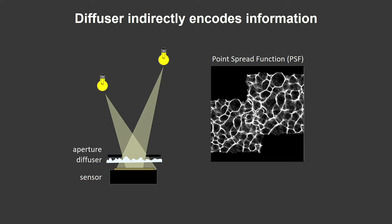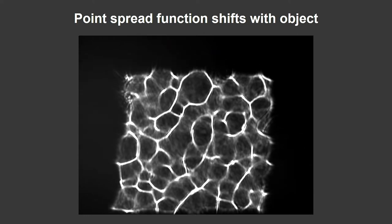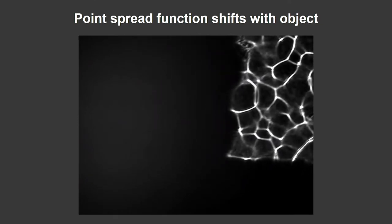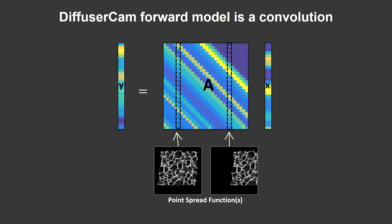This shift property is super valuable because it adds a lot of redundancy to the forward model matrix. The fact that things are similar but shifted means the forward model becomes a pure convolution matrix — fully represented by a single column. Once you know one column, you know all the rest. So we measure one point spread function and fill in the entire A matrix. We never actually instantiate this entire matrix; we use FFT operators to do the convolution, saving a lot of computation.